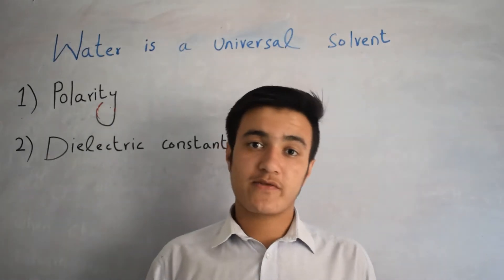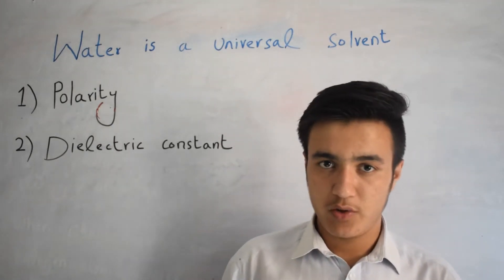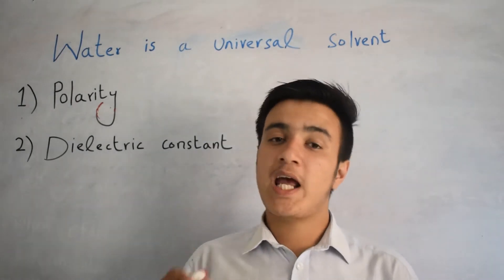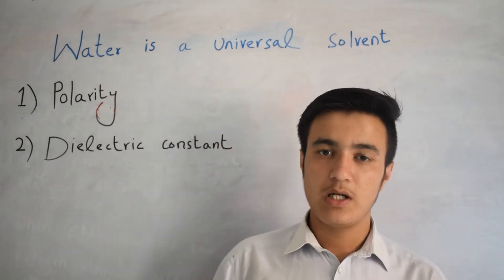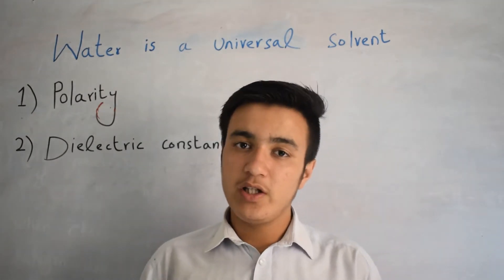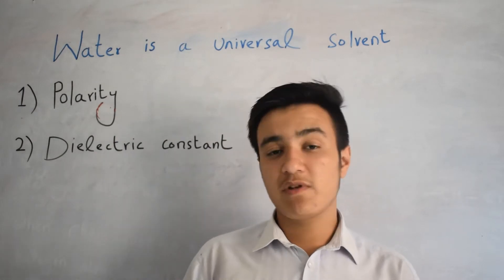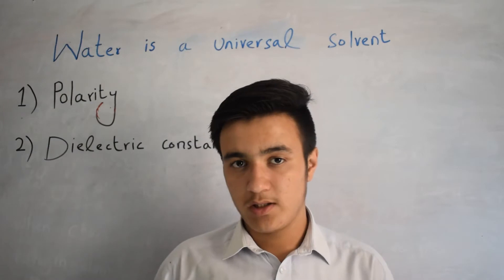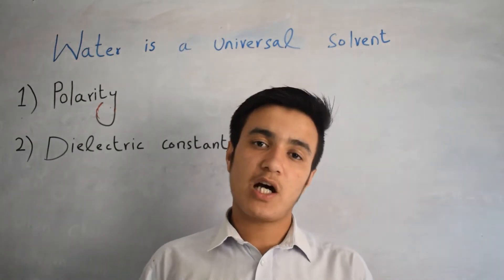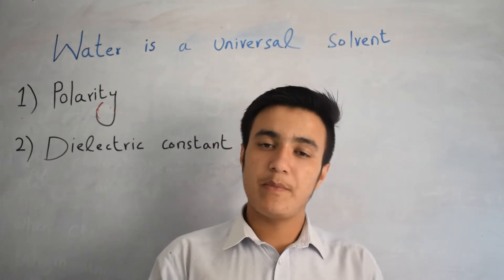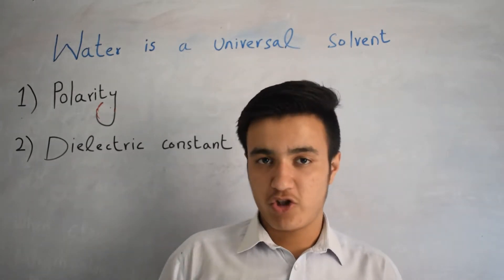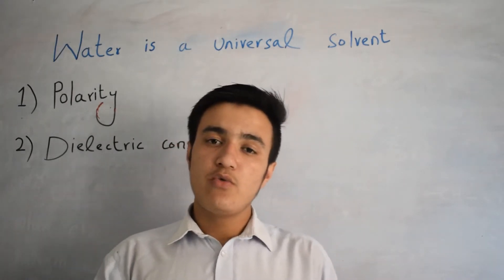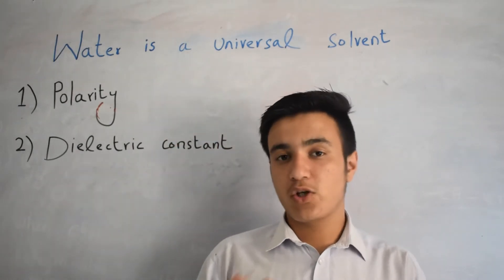A homogeneous mixture of solute and solvent is known as a solution. A solution has two components: the solute and the solvent. The solvent is basically a liquid which dissolves the solute, while the solute is the substance which is being dissolved. There are many solvents — for example, water, benzene, alcohol, ether — but we are not saying that benzene, alcohol, or ether is a universal solvent.